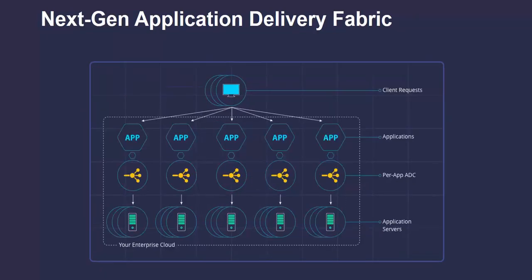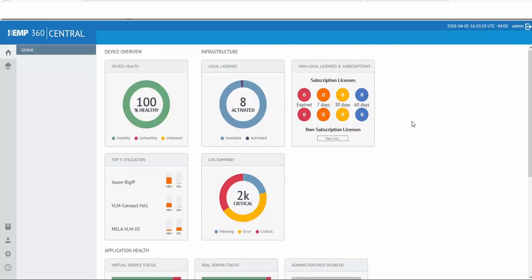Kemp's Application Delivery Fabric takes on a different approach by breaking out of consolidation. Application Delivery Controllers are deployed per application, which eliminates that single point of failure, and each application gets its own dedicated resources. The per-app ADCs are licensed and billed based on actual consumption. Imagine having the ability to deploy unlimited ADCs with unlimited throughput, but pay only for what you use — that notion of over-provisioning or under-provisioning your ADCs is a distant memory. The only question now is, how is this done?